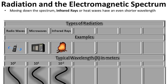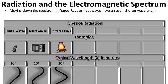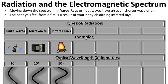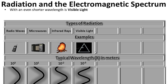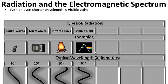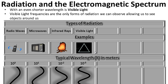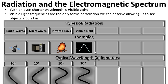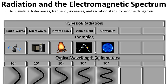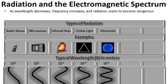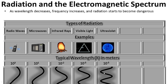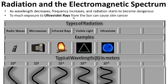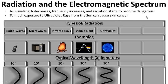Moving down the spectrum, infrared rays or heat waves have an even shorter wavelength. The heat you feel from a fire is a result of your body absorbing infrared heat waves. With an even shorter wavelength is visible light — this is the type of radiation we can see. Visible light frequencies are the only forms of radiation we can observe, allowing us to see everything around us. As wavelength decreases, frequency increases, and radiation starts to become dangerous.